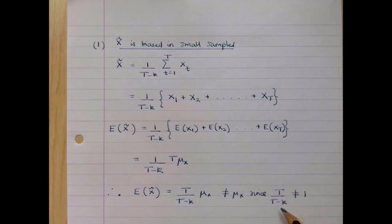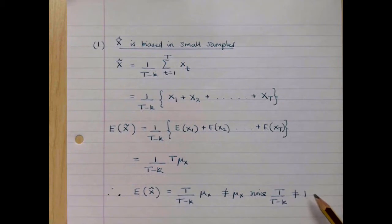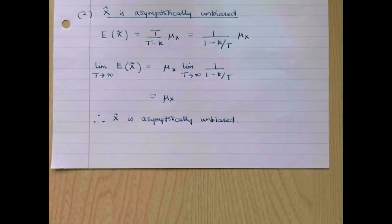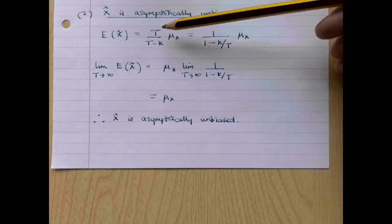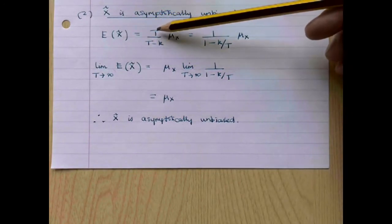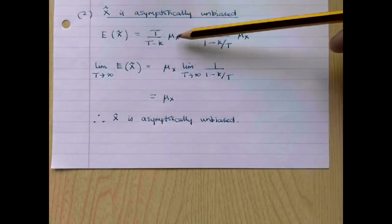That's not equal to mu x, since T over T minus k is not equal to 1. Therefore, at least in small samples, this will be a biased estimator. Next, let's consider the proposition that x tilde is asymptotically unbiased. We've already shown that the expected value of x tilde is equal to T over T minus k multiplied by mu x.